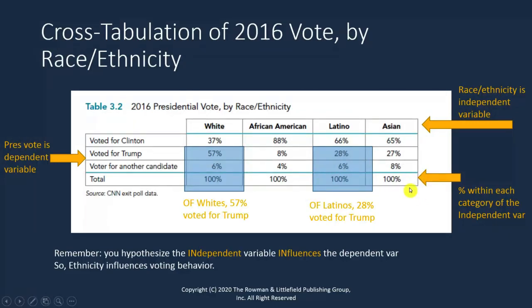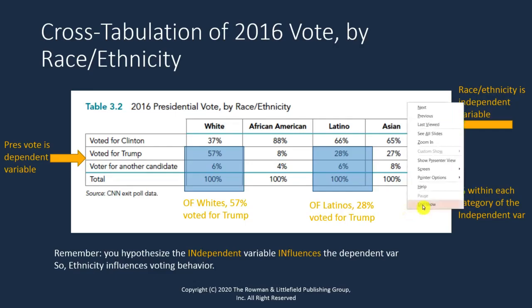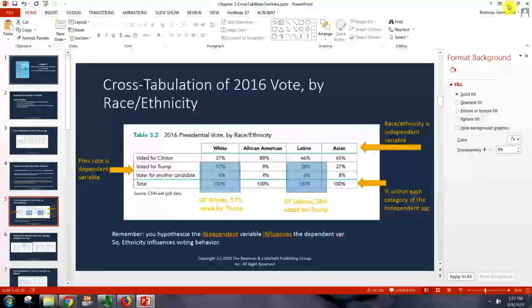Generally we want to arrange our table so that our dependent variable is in the rows, our independent variable is in the columns, and our columns then sum to 100%. This is the way that we want to arrange our cross-tabs consistently. Whenever you do a cross-tab, ask yourself: what is my dependent variable, what is my independent variable? Arrange your cross-tab such that your dependent is in rows, independent in columns, and then ask for column percents. All right, so let's move into Stata now.